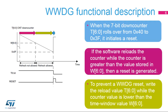This diagram illustrates how the window watchdog operates. When the 7-bit down counter T6-0 bits roll over from 0x40 to 0x3f, it initiates a reset when the T6-bit is cleared. This happens when the application software did not react within the expected time window. If the software reloads the counter while the counter is greater than the value stored in W6-0 bits, then a reset is generated — this happens when the application refreshes the counter too early. To prevent a window watchdog reset, the reload value T6-0 bits must be written while the counter value is lower than the window value W6-0 bits, located in the green area.